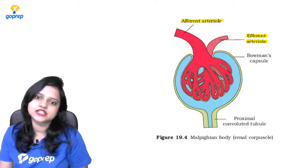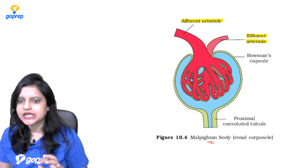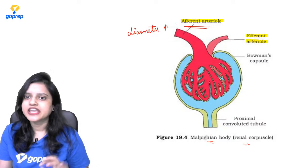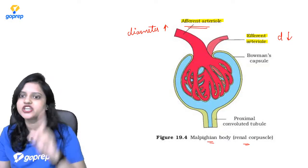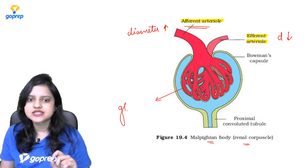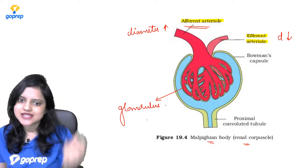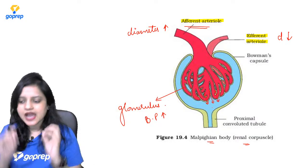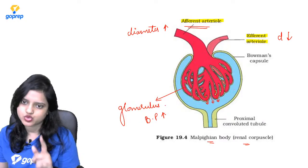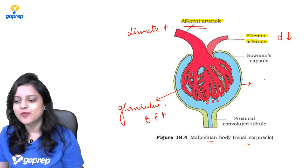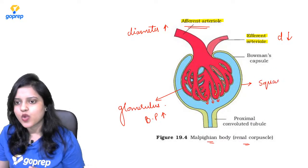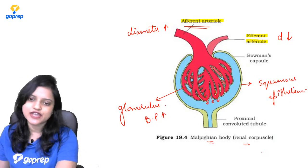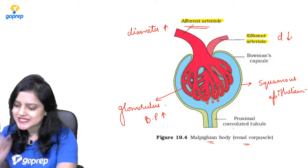The structure of the Malpighian body or renal corpuscles: the afferent arteriole has a larger diameter, and the efferent arteriole has a smaller diameter, so there is more pressure in the glomerulus. Due to this arrangement, filtration occurs and filtrate accumulates in the Bowman's capsule. The lining of the Bowman's capsule is made of squamous epithelium, and there are podocytes with foot processes.